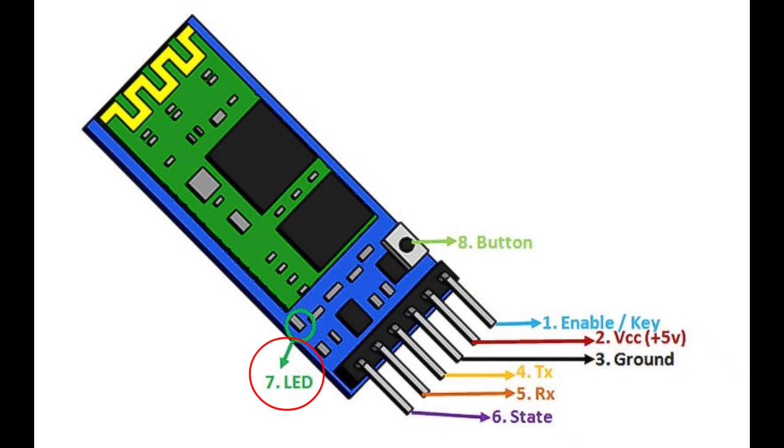Blink once in two seconds shows the module has entered command mode. Repeated blinking shows it's waiting for connection in data mode. Blink twice in one second shows connection successful in data mode.